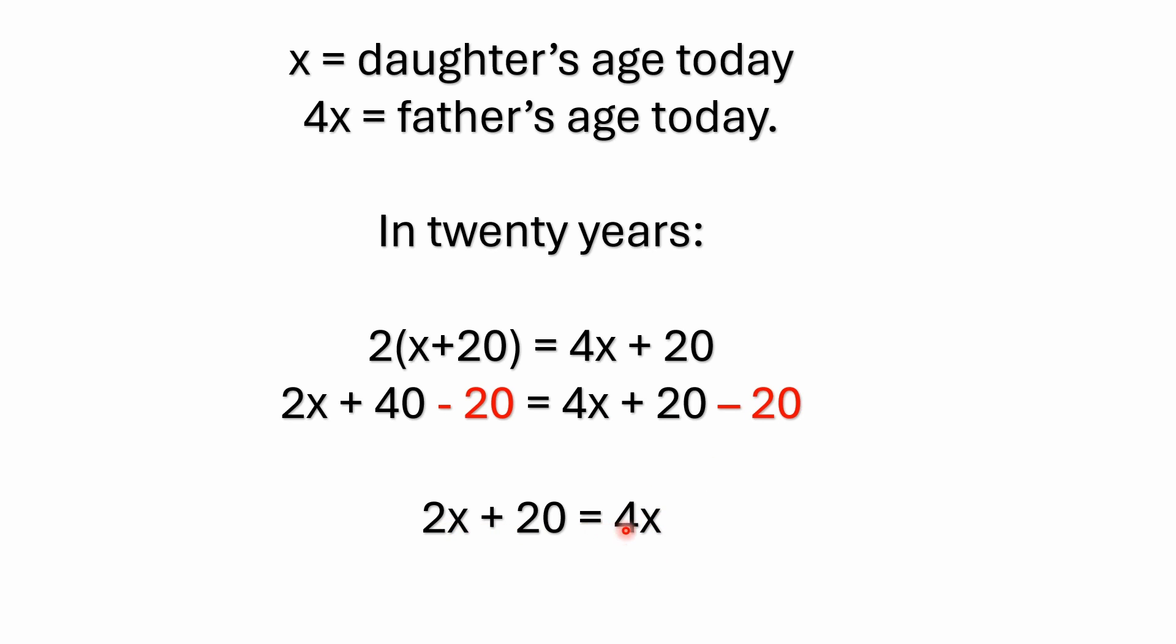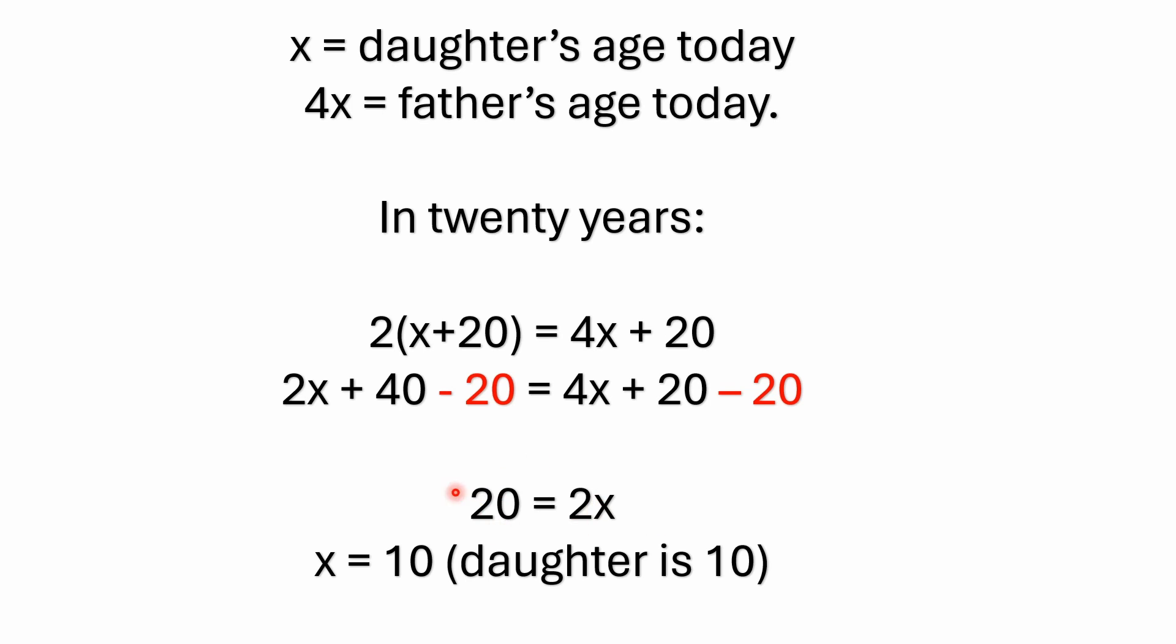So 2X plus 20 equals 4X. So we can further simplify that by subtracting 2X from both sides. 2X minus 2X plus 20 equals 4X minus 2X. And what does that leave us with? Well, it just leaves us here with 20 equals 2X.